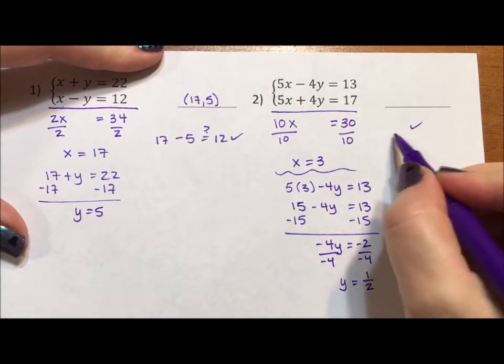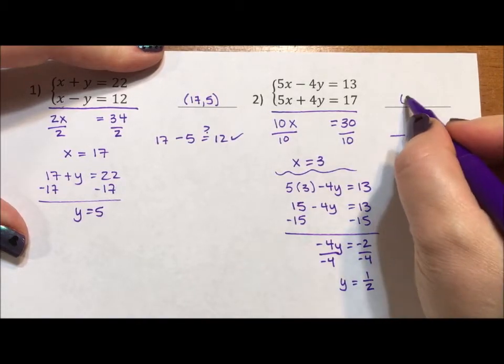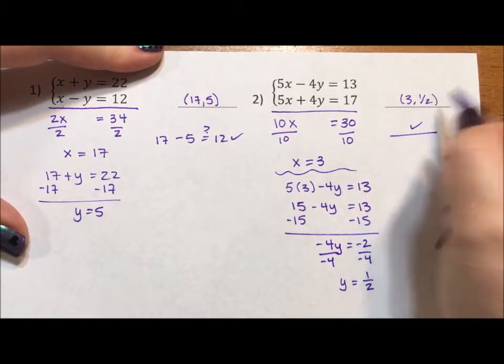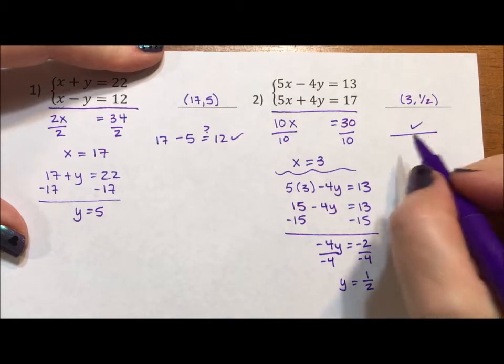So now we're going to check our work. We have this answer, 3 comma 1 half. We want to find out if it's correct. We check it in the second equation.